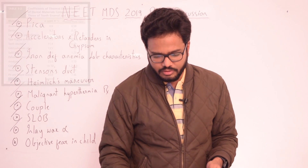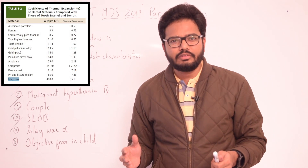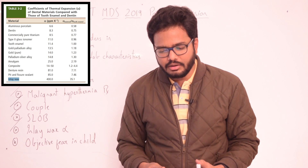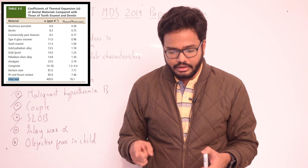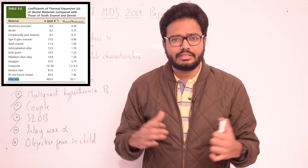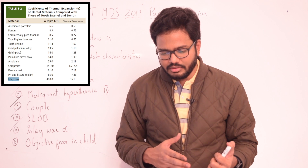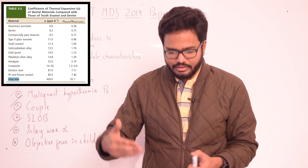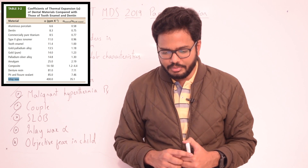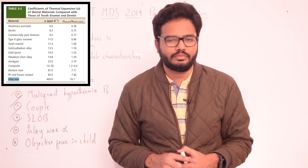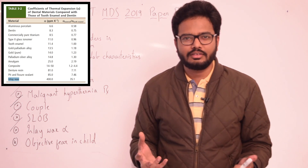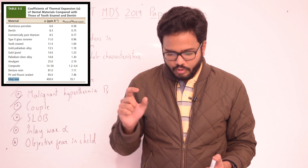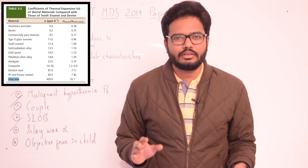Moving on to inlay wax coefficient of thermal expansion. You have all the values given in Phillips. The coefficient of thermal expansion of inlay wax is the highest among dental materials, around 400. When you compare this with tooth enamel, the ratio is approximately 35 — this ratio is the highest compared to other materials. So 400 is the coefficient of thermal expansion of inlay wax. It's a wax, so a high coefficient is expected, but quantification is also important.